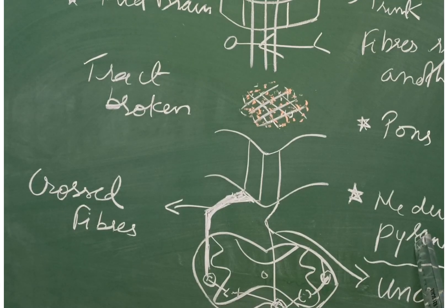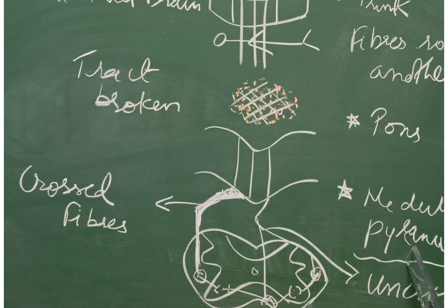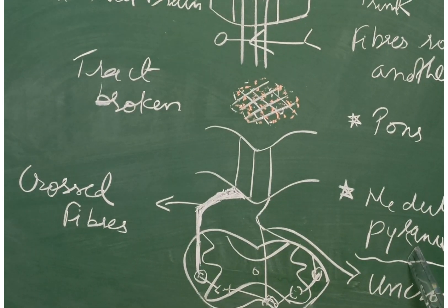In the medulla, this bundle lies most anteriorly and forms a bulging known as pyramid. Hence, the name of the tract is pyramidal tract.